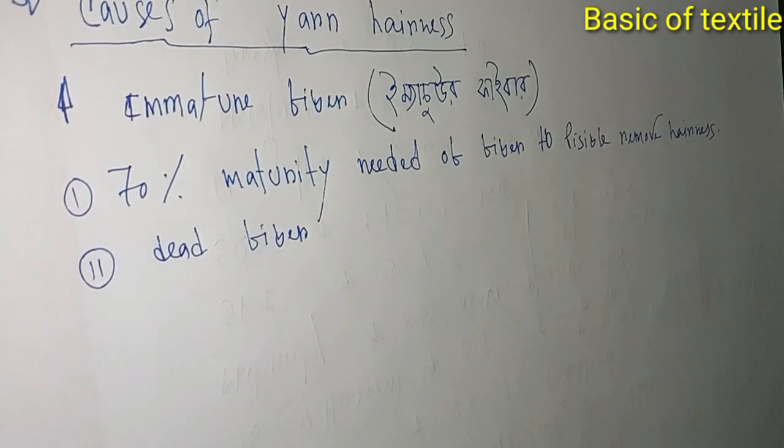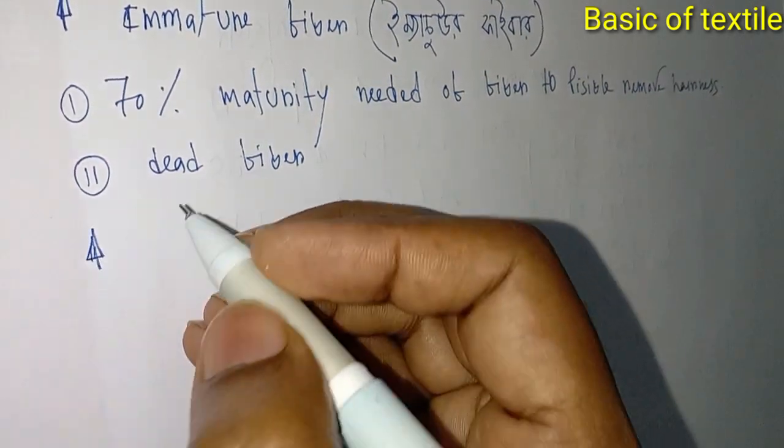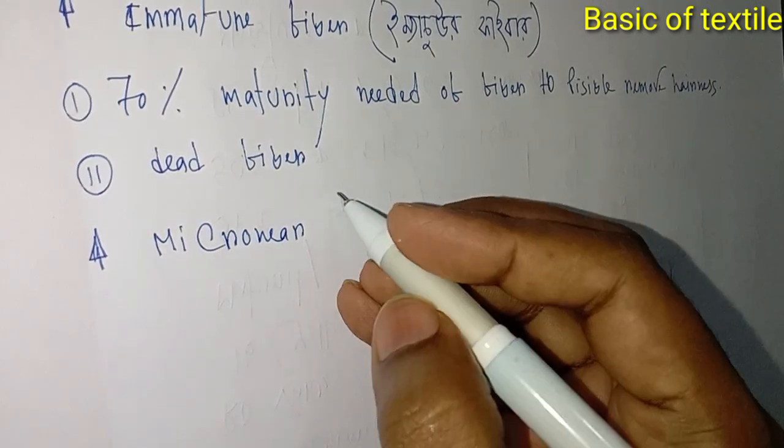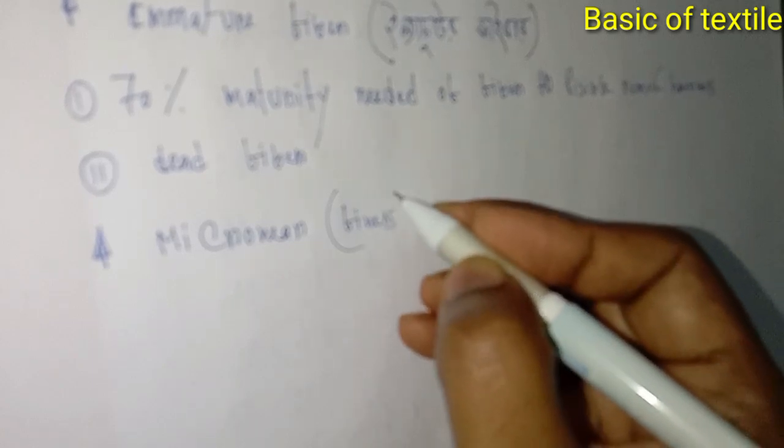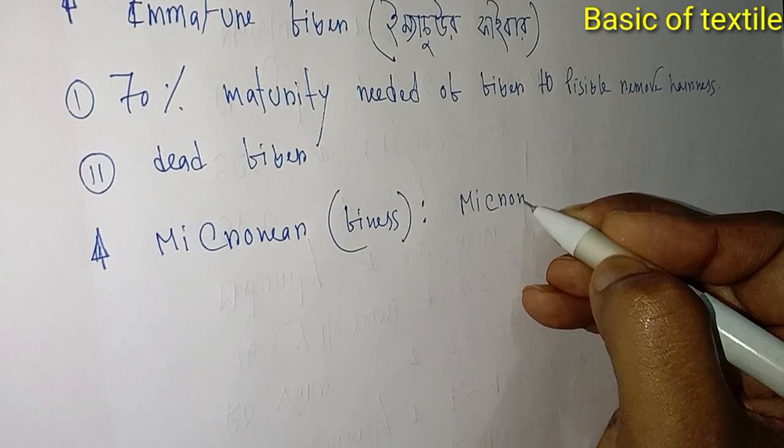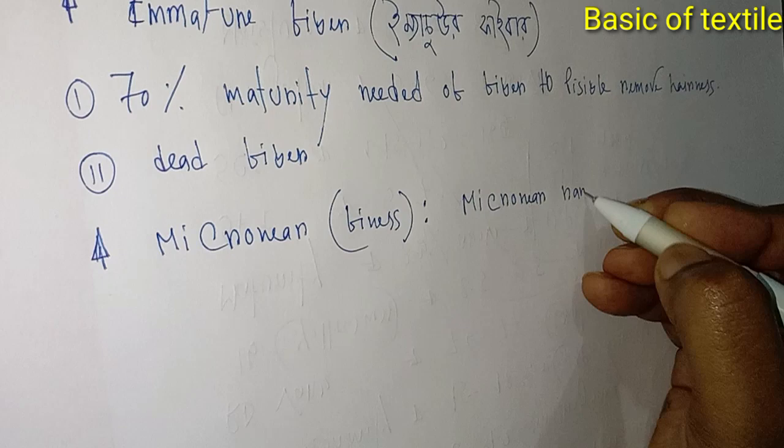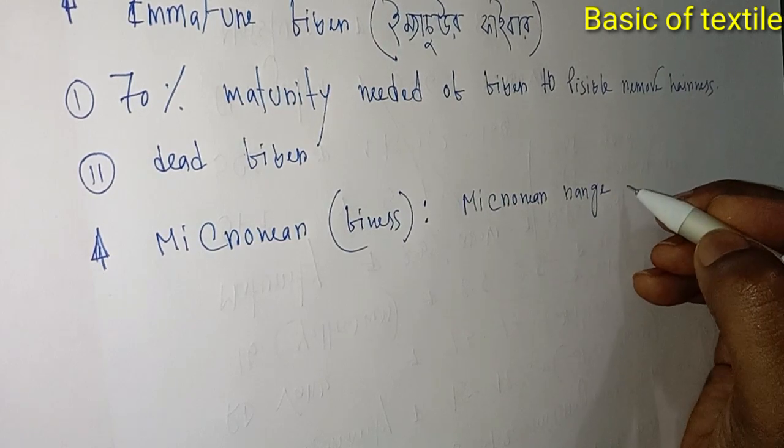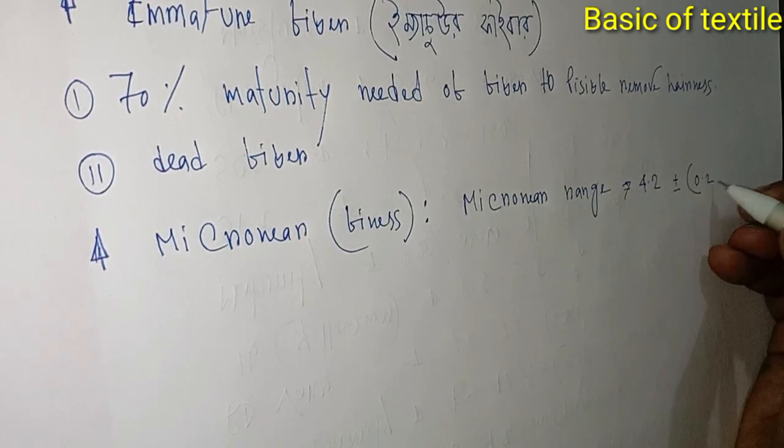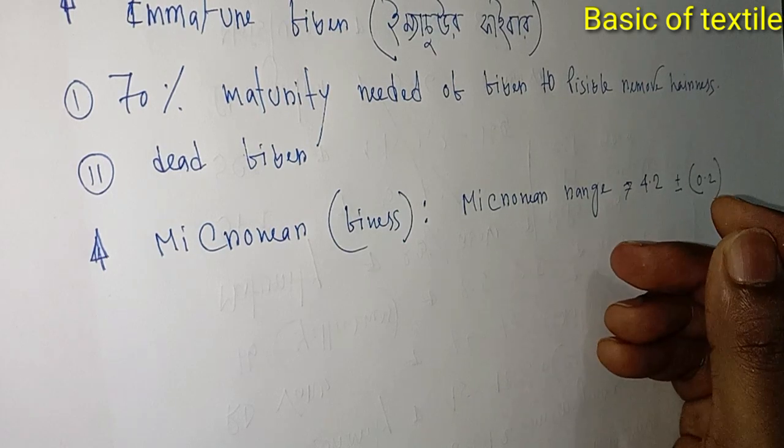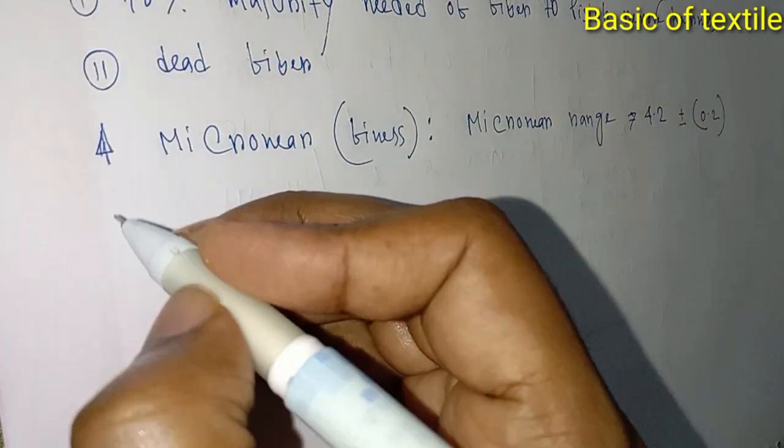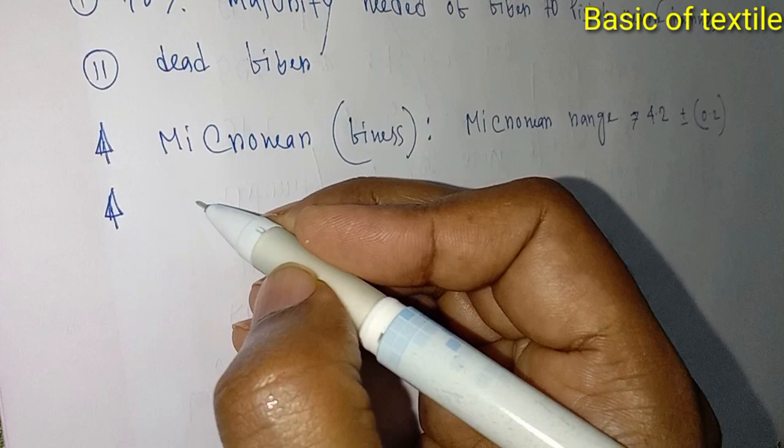Micronaire fineness - if the micronaire range is 4.2 or the range is plus minus 0.2, this is okay. If it is outside this range, hairiness will increase.